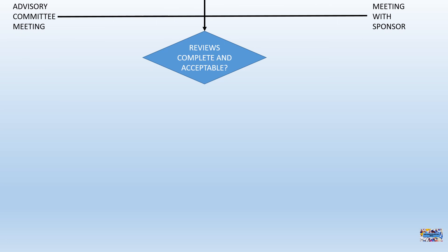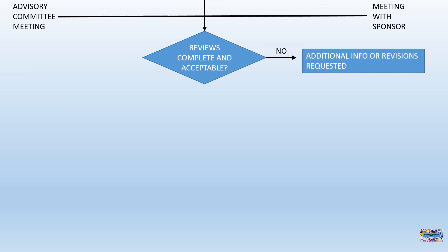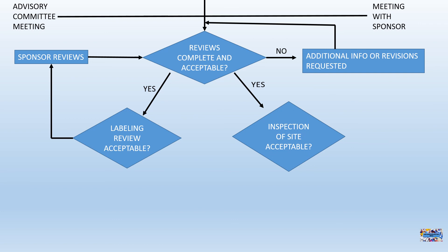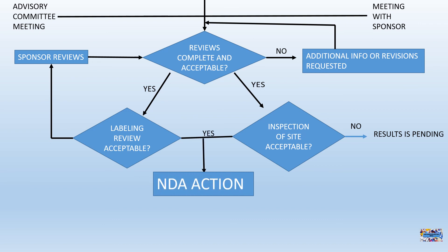Once the review is complete and acceptable, the process proceeds to Labeling Review Acceptability. If the label is missing one or more essential components, the sponsor reviews and resolves the issues. Similarly, Inspection of Site Acceptability is conducted. If not acceptable, the result is pending. After labeling and site inspection review are acceptable, a New Drug Application action is taken. The Food and Drug Administration then decides whether the drug can be marketed or not.